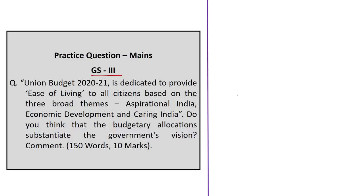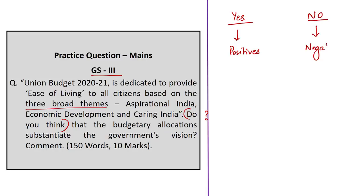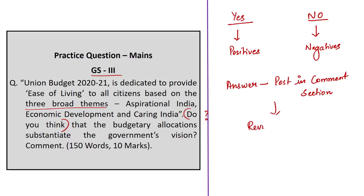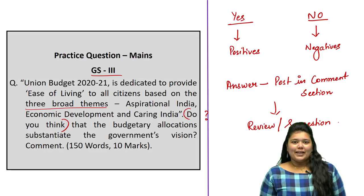A second GS Paper 3 mains question: 'Union budget 2021 is dedicated to provide ease of living to all citizens based on the three broad themes — Aspirational India, Economic Development, and Caring India. Do you think budgetary allocations substantiate the government's vision? Comment.' Since the question asks 'do you think?' you can answer either way — listing positives if you agree, or mentioning negatives if you disagree. Write answers for both mains questions and post in the comment section for review within 10 to 14 working days. Like, comment, share, and subscribe to Shankar IAS Academy for more civil service exam preparation.